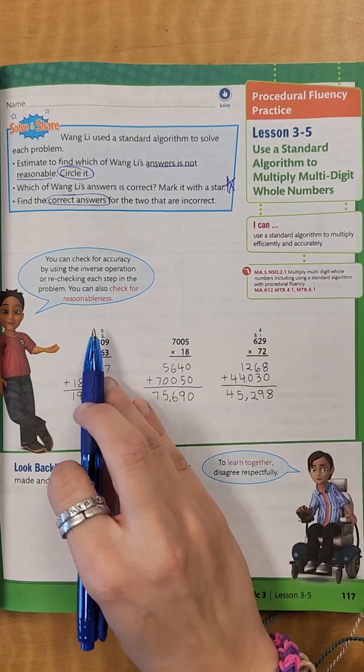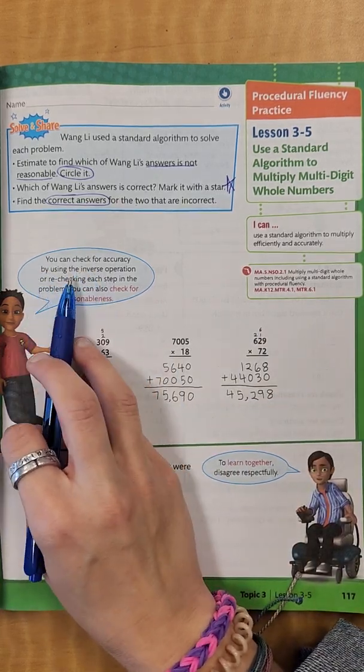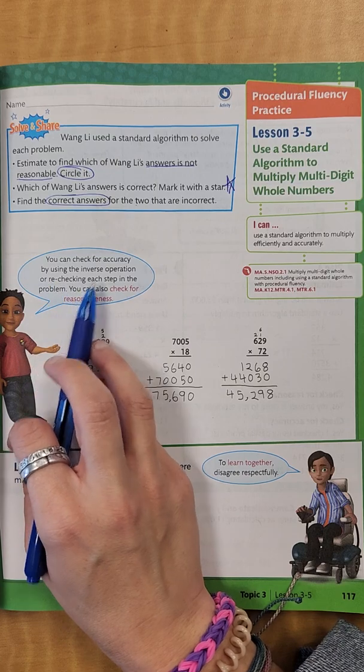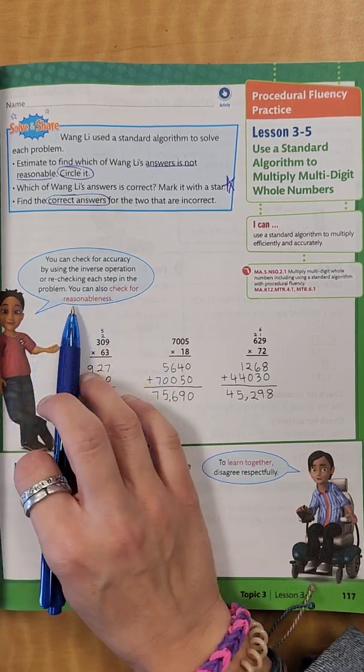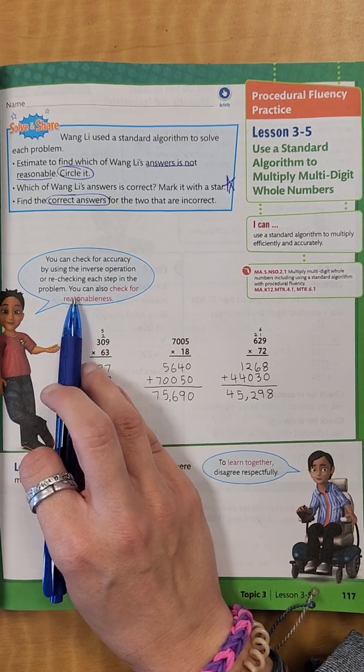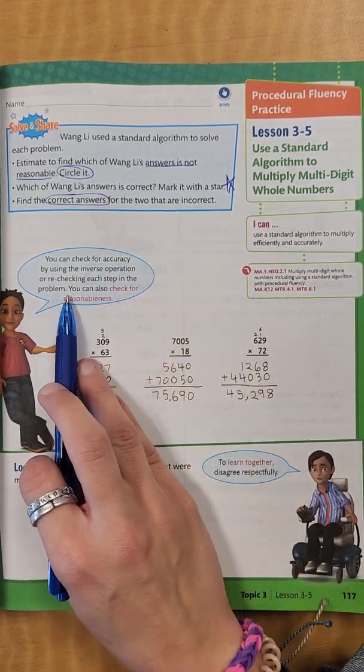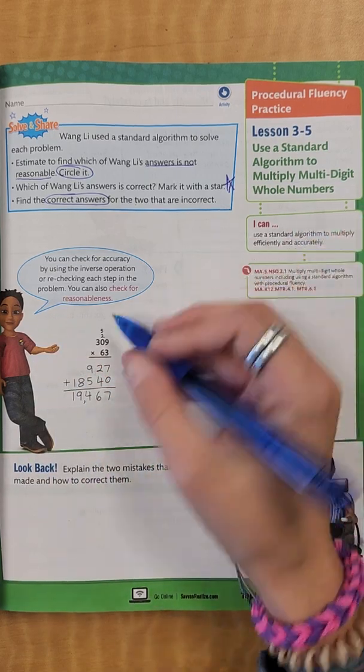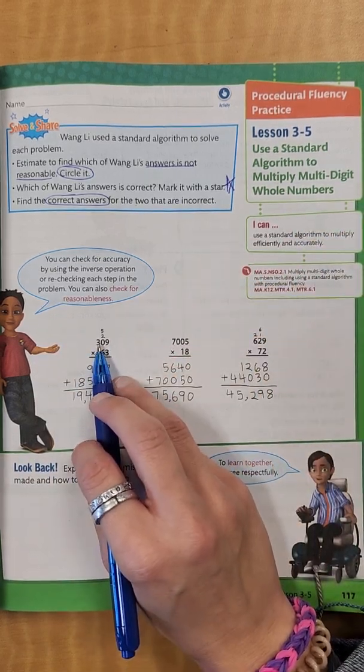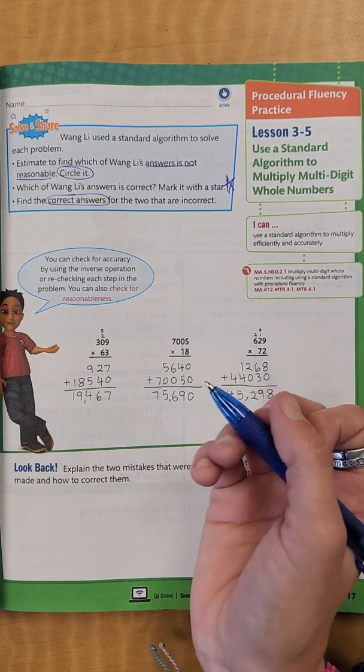So let's look at what we have going on. It says you can check for accuracy by using the inverse operation or rechecking each step in the problem. You can also check for reasonableness. One thing that we can do is we can look at each of these and we could estimate to see if they're correct.